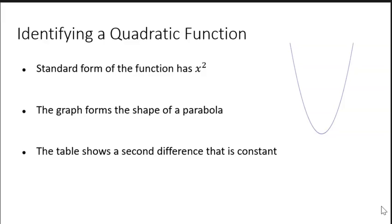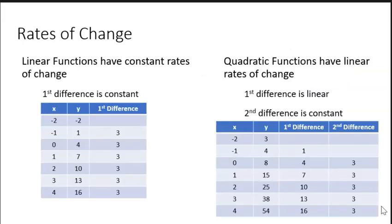The table of a quadratic function shows a linear first difference and constant second difference. The first and second differences that you can find in the table give further insight into the rate of change. Each type of function has a unique rate of change. For example, all linear functions have a constant rate of change, where the first difference is constant.